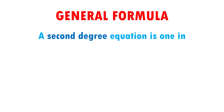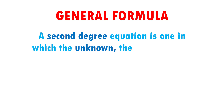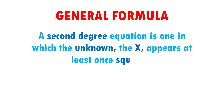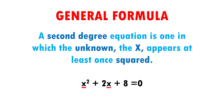A second-degree equation is one in which the unknown, the x, appears at least once squared, like x squared plus 2x plus 8 equals 0. Our unknowns are the x's, and one is squared, so it is a second-degree equation.